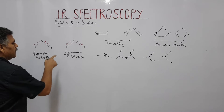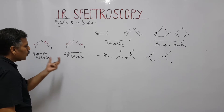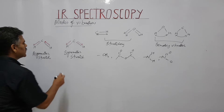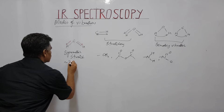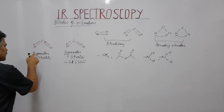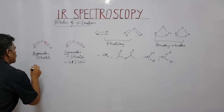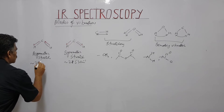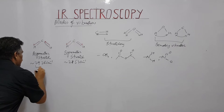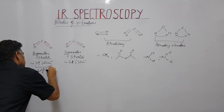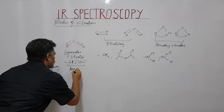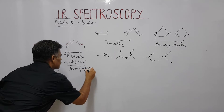For a given molecule, symmetric stretching appears at a lower frequency compared to asymmetric stretching. For example, in the methylene (CH2) group, the symmetric stretch appears at 2853 cm⁻¹, while the asymmetric or anti-symmetric stretch appears at 2926 cm⁻¹ — at a higher frequency.